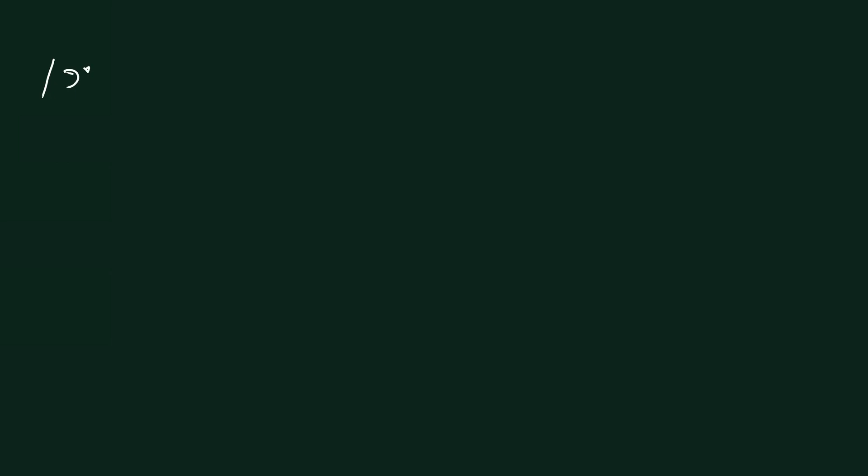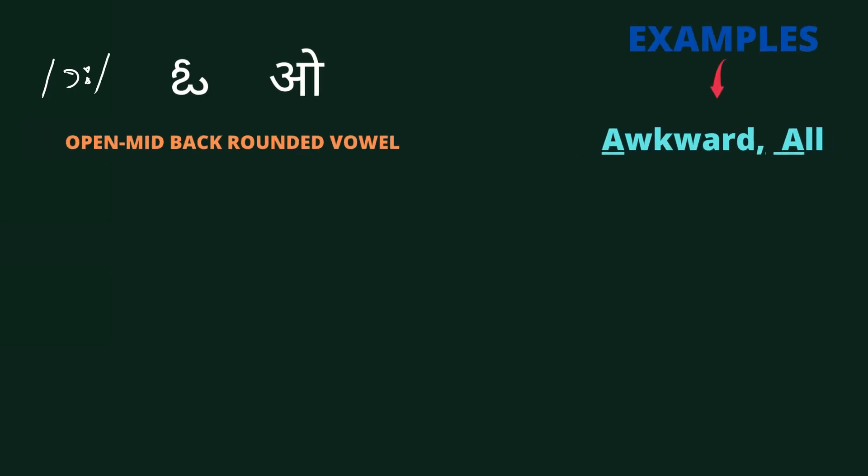Further moving on, we have the vowel sound /ɔː/. It is an open-mid back rounded vowel. Examples are: awkward, all.